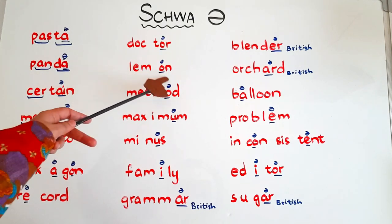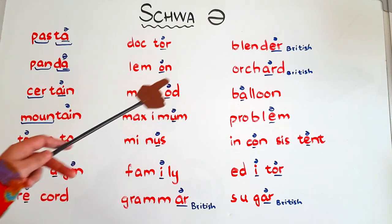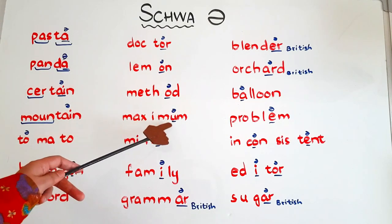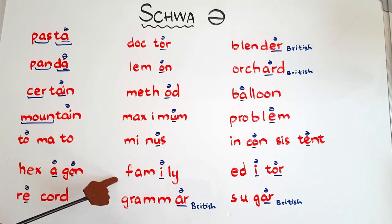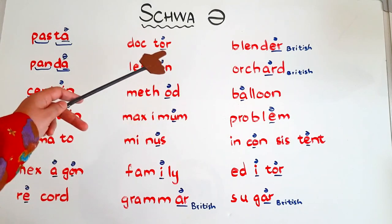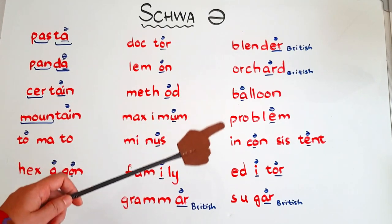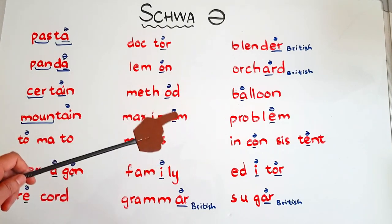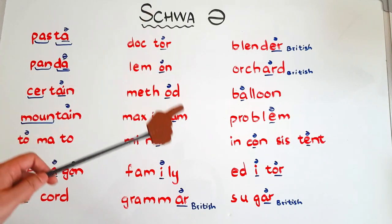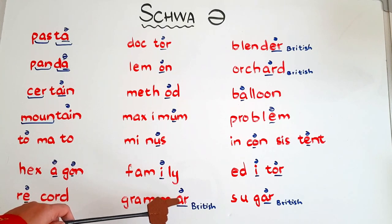Then we have 'lemon' — the 'o' is saying the schwa sound. 'Method' — the second vowel is schwa. 'Maximum' — here 'u' is saying the schwa sound. 'Minus' — the second vowel is schwa. 'Family' — 'i' is saying the schwa sound. 'Grammar' — if you follow British pronunciation, 'ar,' 'er,' 'or,' 'ir' all say the schwa sound because 'r' is silent after a vowel in British English unless followed by a word starting with a vowel. So in British English it's 'grammar,' and in American English it's 'grammar' with the 'r' sound.